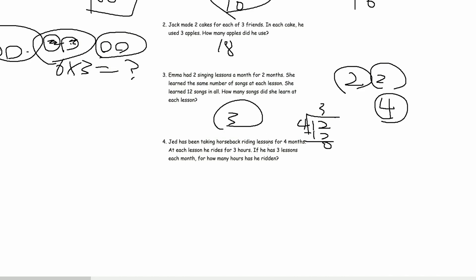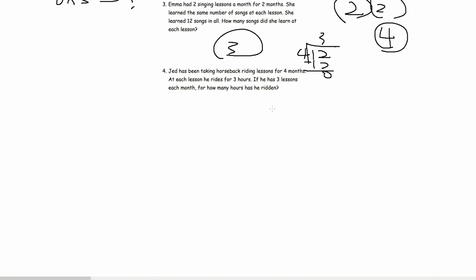Jed has been taking horseback riding lessons for 4 months. Each lesson, he rides for 3 hours. If he has 3 lessons each month, for how many hours has he ridden? Okay. 3 lessons each month. 3 lessons. We have 1 lesson. Another lesson. Another lesson.